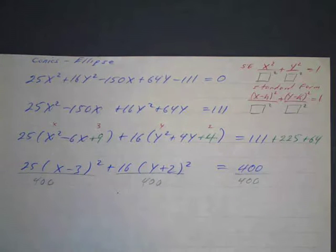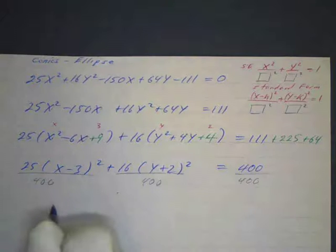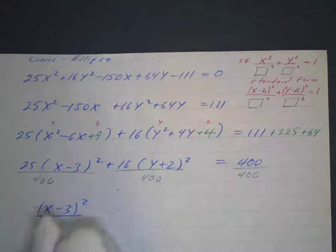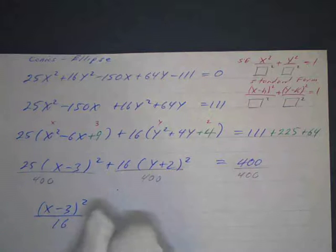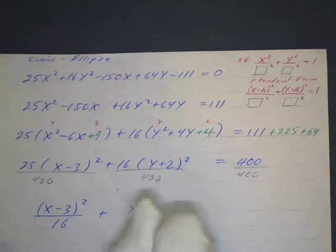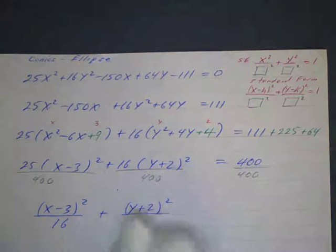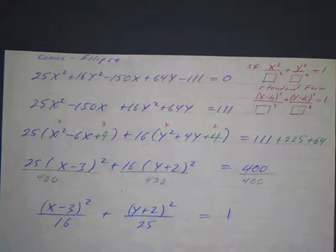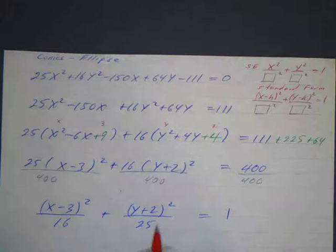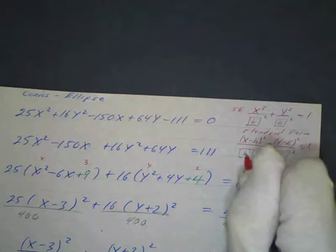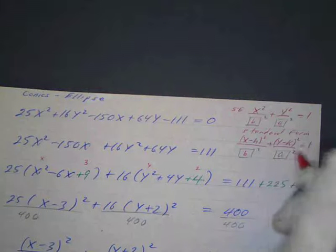And 25 goes into 400 16 times. 16 quarters in $4. And 16 goes into 400 25 times, believe it or not. And 400 over 400 is 1. So now we have this in standard form. So now we can see that my a squared is going to be 25. So this would be the b squared and this would be the a squared.